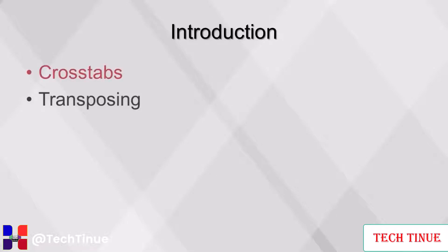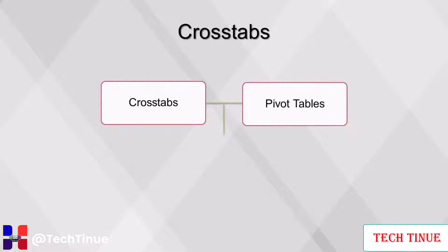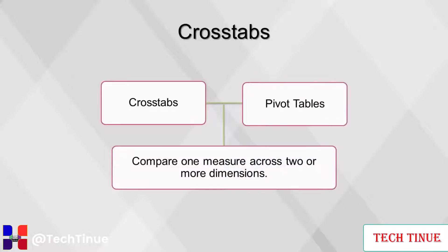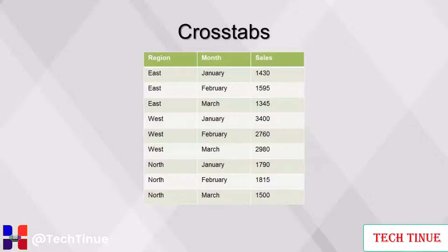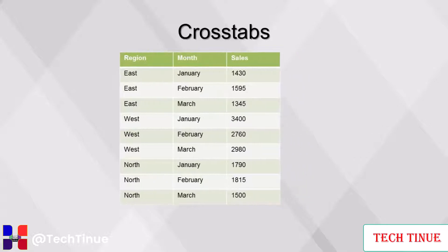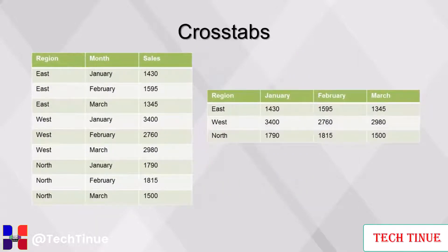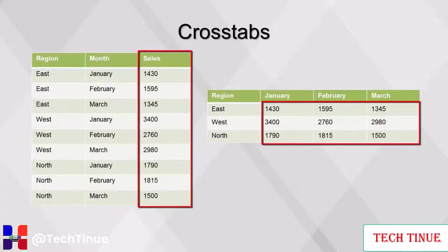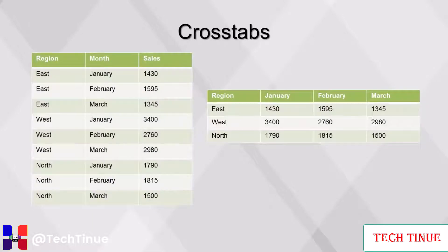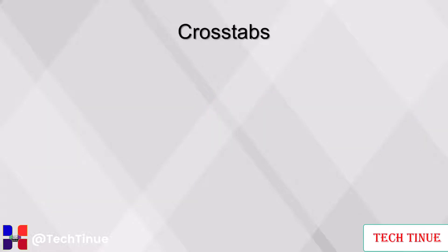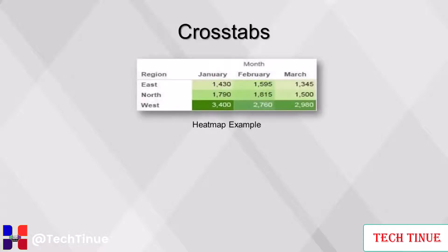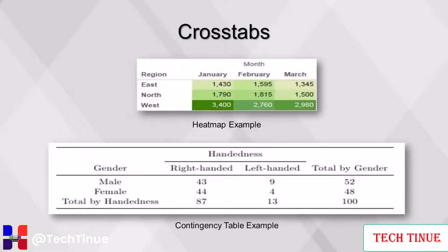This video will cover crosstabs and transposing. Crosstabs are also called pivot tables, used to compare one measure across two or more dimensions. One dimension will have its values transformed into columns and the other dimensions will be aggregated, resulting in a table with fewer rows but more columns. For example, this table shows sales by region and month. A crosstab function is performed with region defined as the grouping field, month as the header field, and sales as the data field. Crosstabs are an effective way to summarize and present data as trends are easier to identify, and in data visualization, color is added to build a heat map. Crosstabs are also used in statistics to build contingency tables.